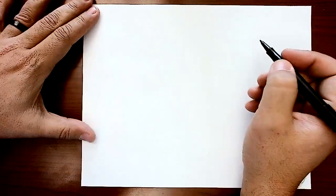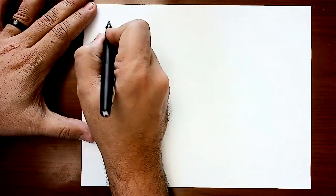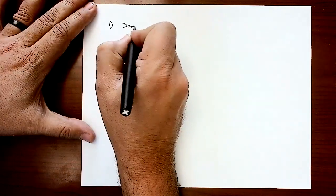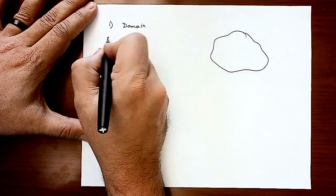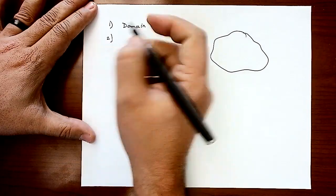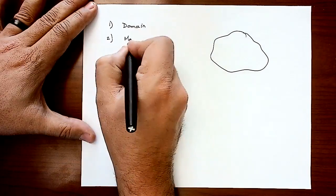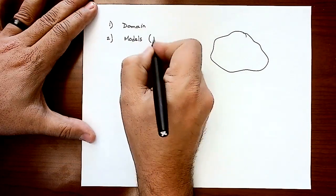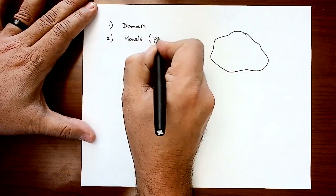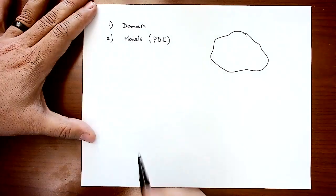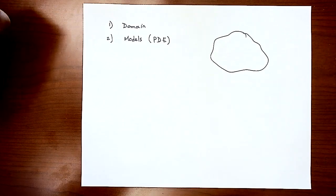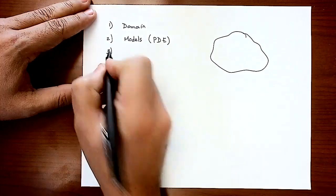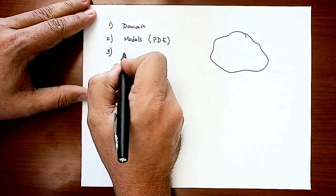Let's recap what we have so far. Number one in your process is to have your domain, which is represented by that irregular shape. Number two, you select your models — the governing equation, which most of the time is going to be partial differential equations — to describe your process, whether it's a heat transfer problem or a flow problem. Number three, you set up your boundary conditions.